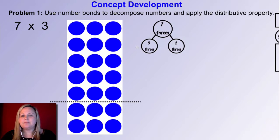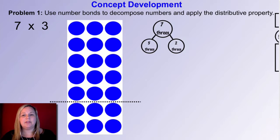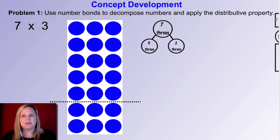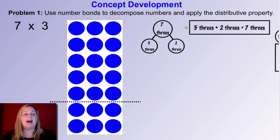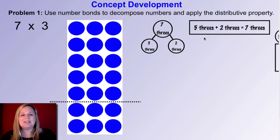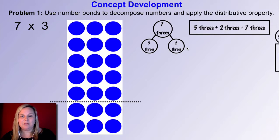Take a look at the number bond I can draw that matches this. Write an equation on your board that shows how to add those two parts — how would you add the top part of the array to the bottom part? Go ahead and pause the video. The equation is: five threes plus two threes equals seven threes. So the two multiplication sentences you used to help solve 7 times 3 are 5 times 3 plus 2 times 3.